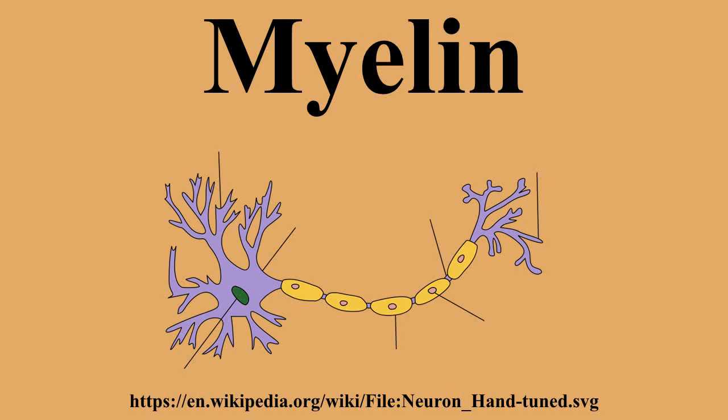Myelin is about 40% water. The dry mass is about 70–85% lipids and about 15–30% proteins. Some of the proteins are myelin basic protein, myelin oligodendrocyte glycoprotein, and proteolipid protein.